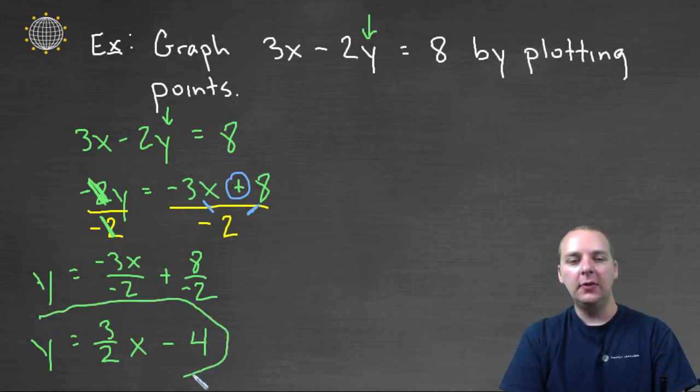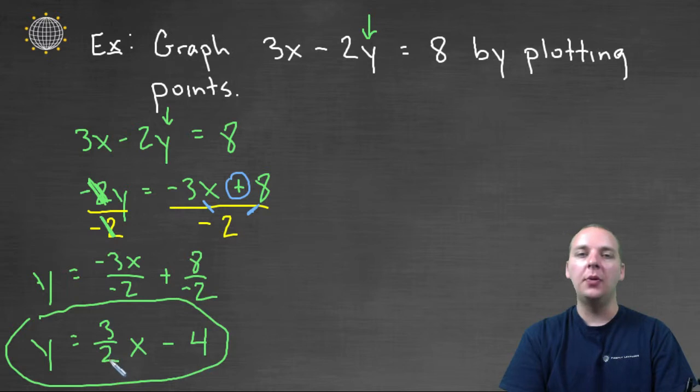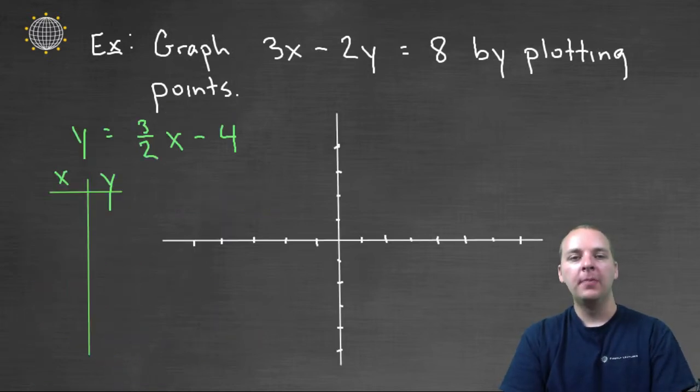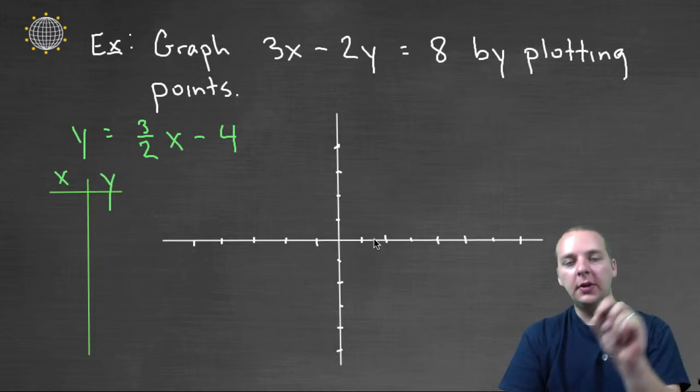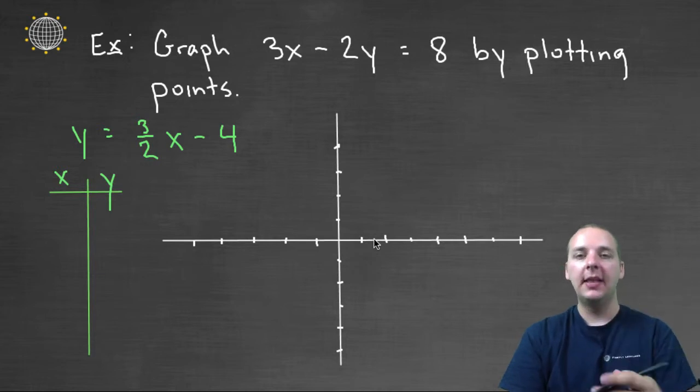So this is the form of the equation that I would probably use if I were to graph by plotting points. So once we have this equation solved for y, where do we go from there? Well now it's time to make our x-y table. And what this is going to give us is a list of ordered pairs of points that are on the graph of this equation. And once we have those points, and once we see how they're lining up in a straight line, we'll simply connect the dots with a line, and that'll be the graph of our linear equation.